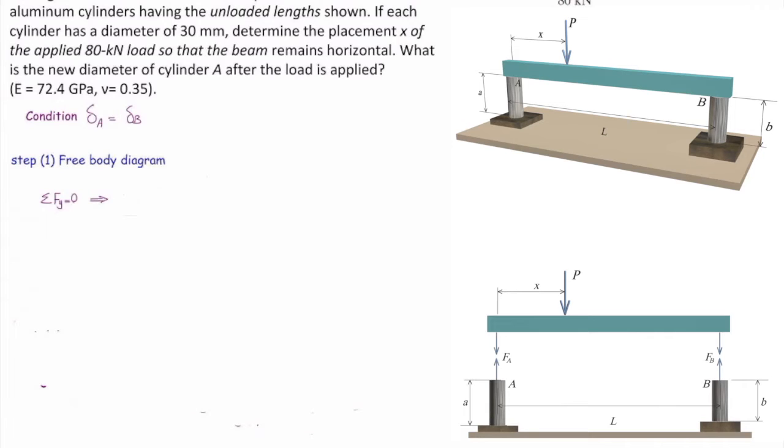Sum of the forces, we have three forces in the top element. F_A plus F_B is equal to 80 kilonewtons. There is another equation, which is the moment, which at this time we can't use because we are looking for X. We will use the moment equation later on.